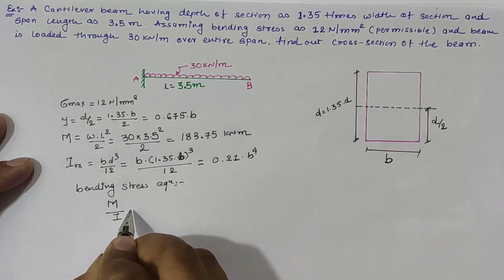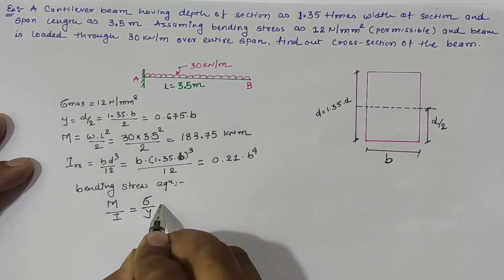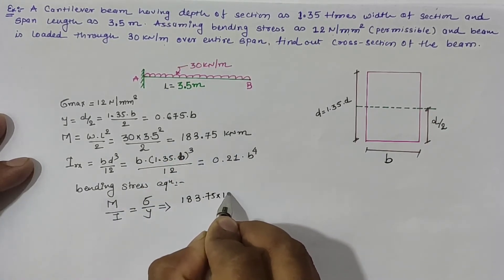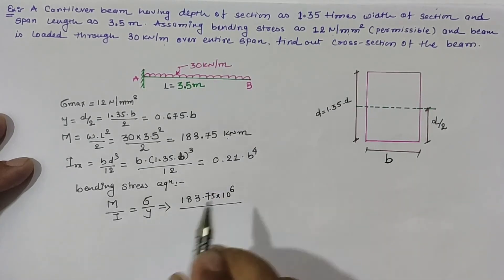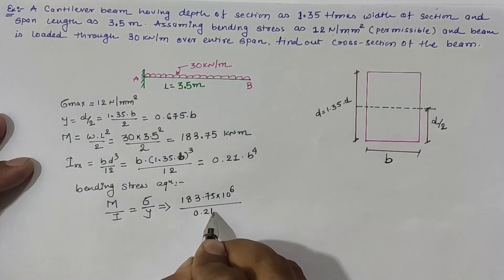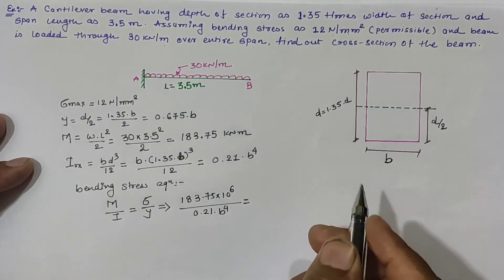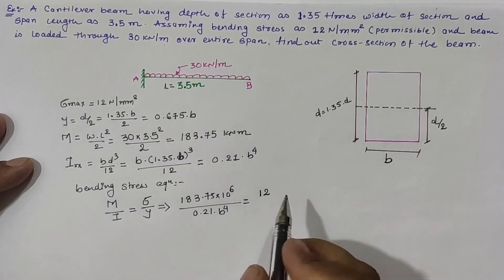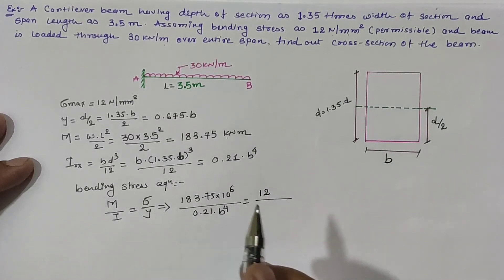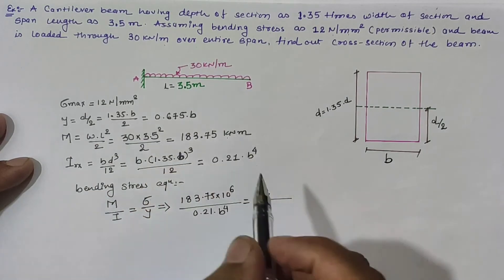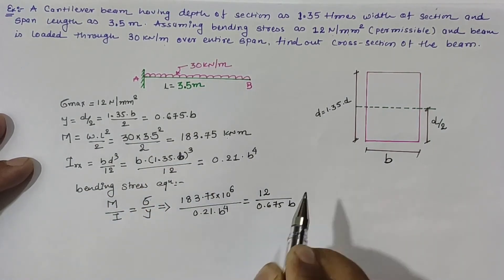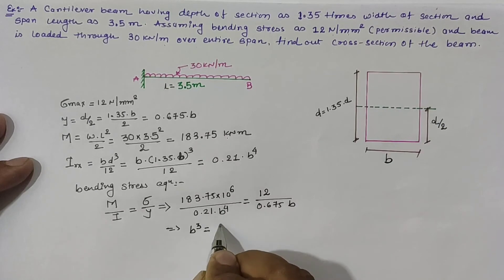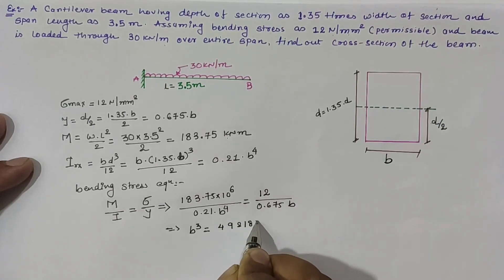Using the bending stress equation M over I equals sigma over y: the moment is 183.75 kilonewton meter, converted to 183.75 into 10 raised to 6 Newton mm. I equals 0.21b to the power 4, sigma is 12 Newton per mm square, and y equals 0.675b. Solving this equation, we get b cubed equal to 49,218,750.